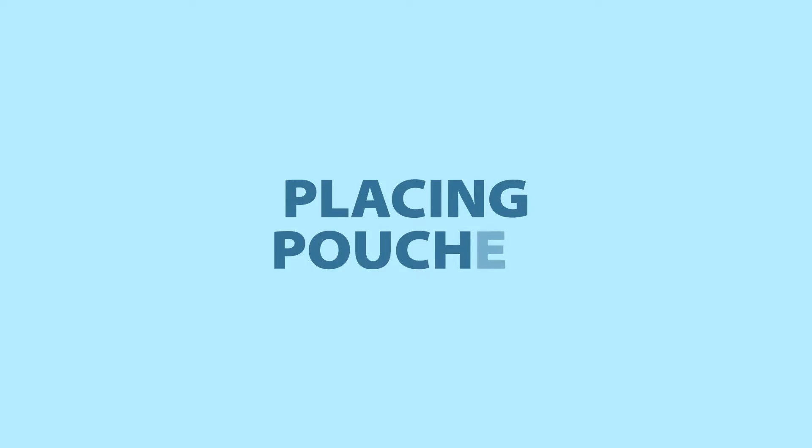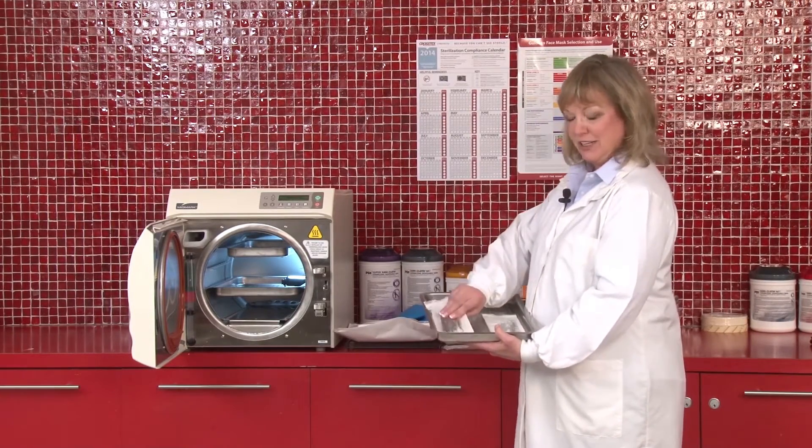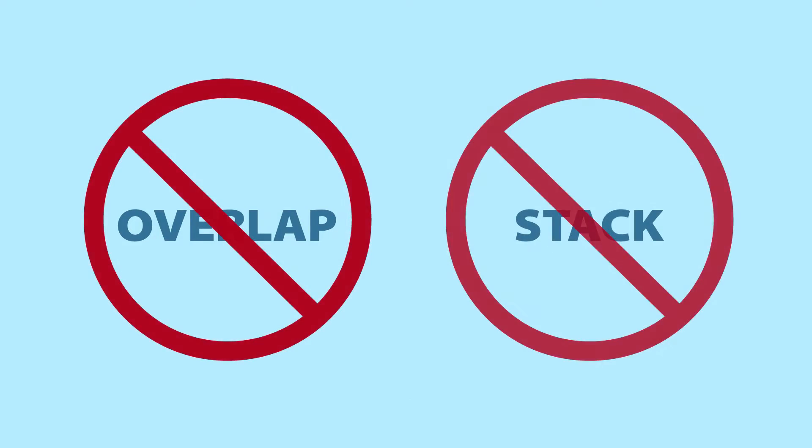When placing pouches into the sterilization tray, you want to make sure to place them in a single layer. You want to have at least a quarter inch of space between each pouch. You don't want to overlap the pouches. You don't want to stack the pouches.